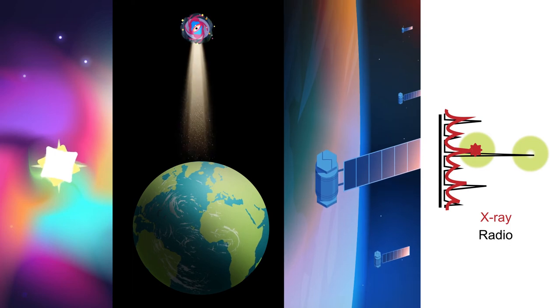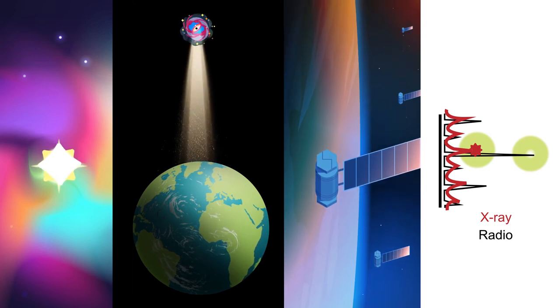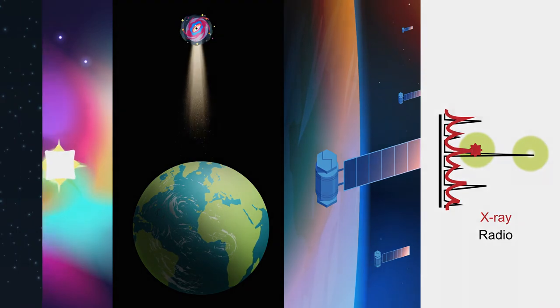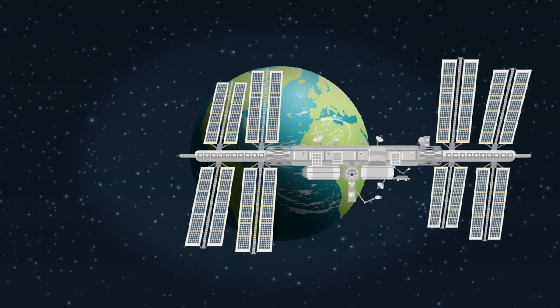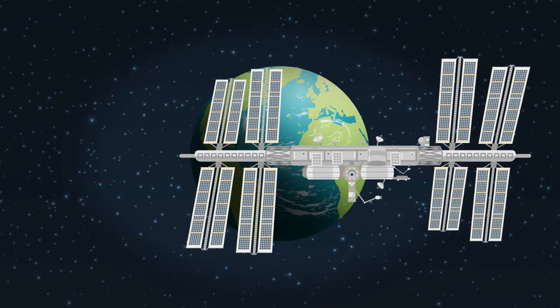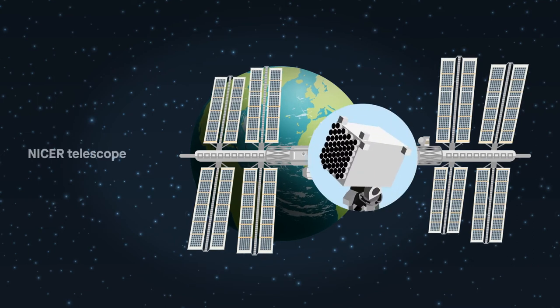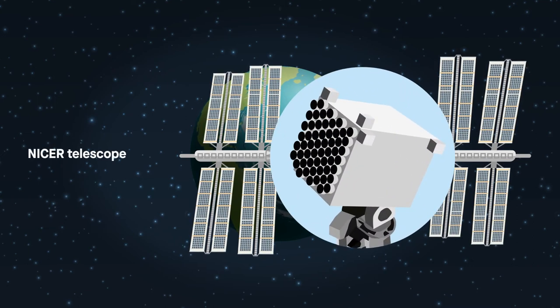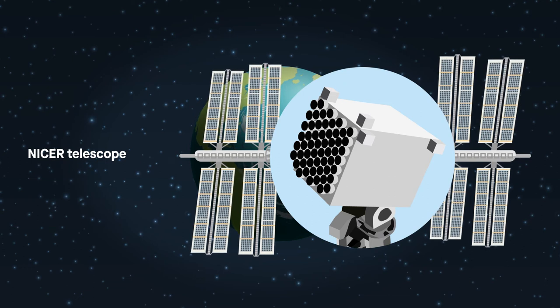That foray into the more energetic region of the spectrum had never been measured for a giant pulse. The team's discovery provided a more complete picture of the Crab Pulsar's energy signature, thanks to NASA's NICER telescope, the Neutron Star Interior Composition Explorer.